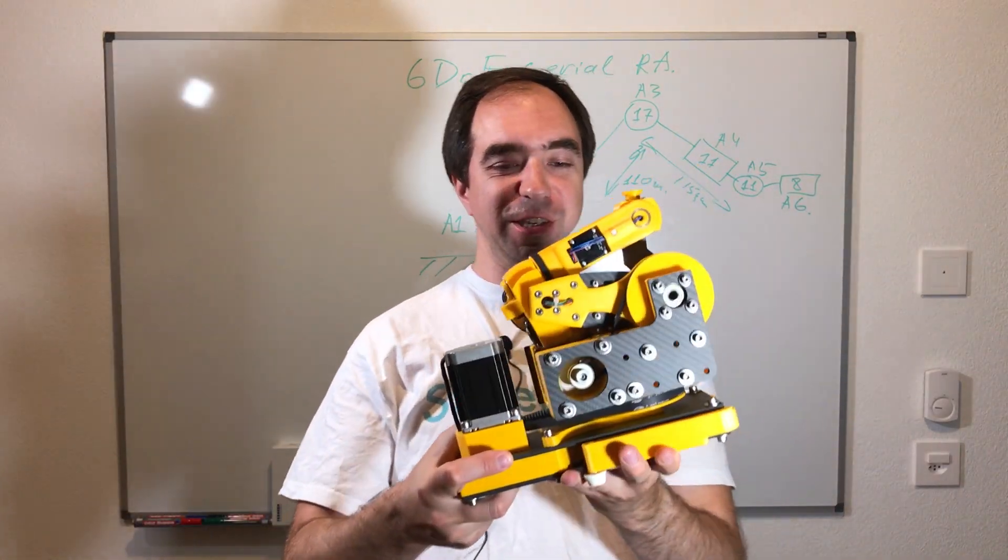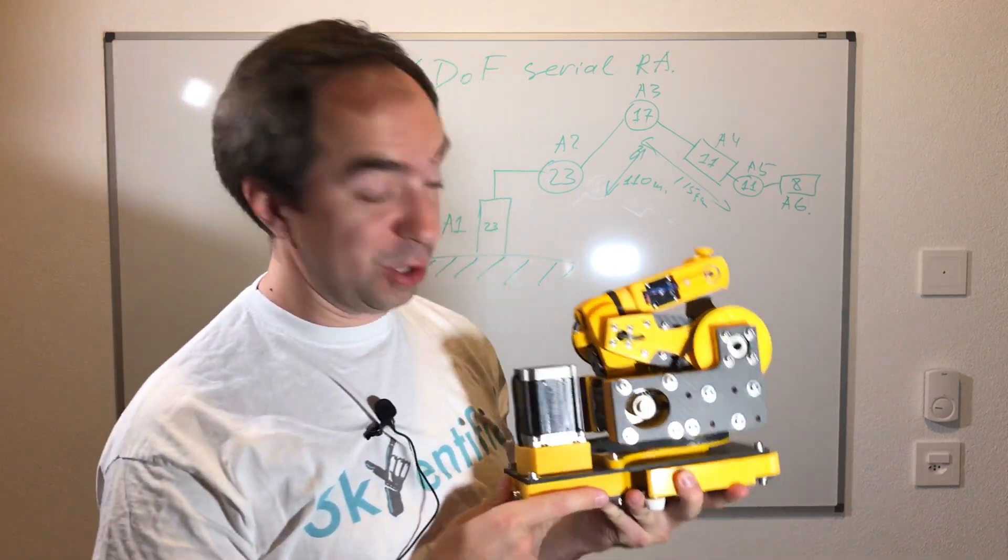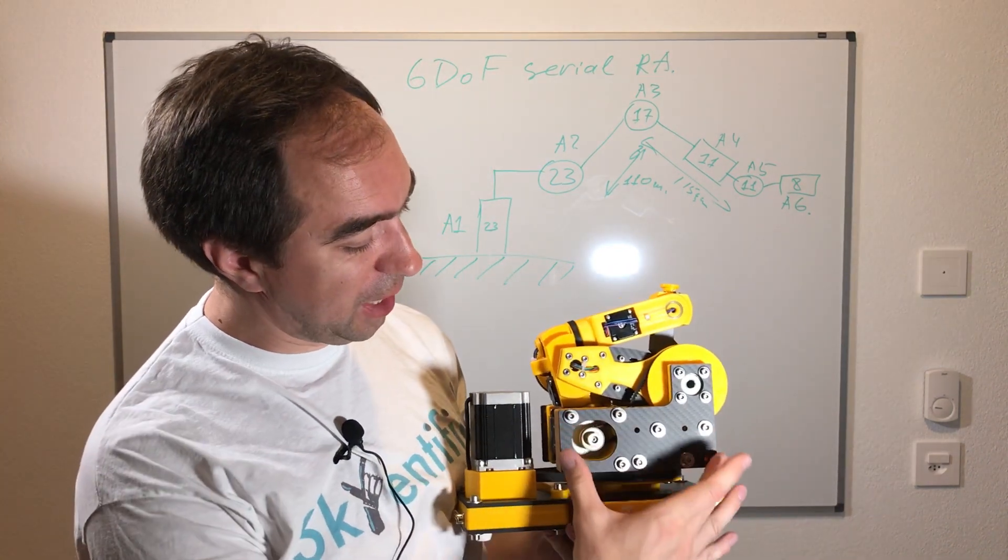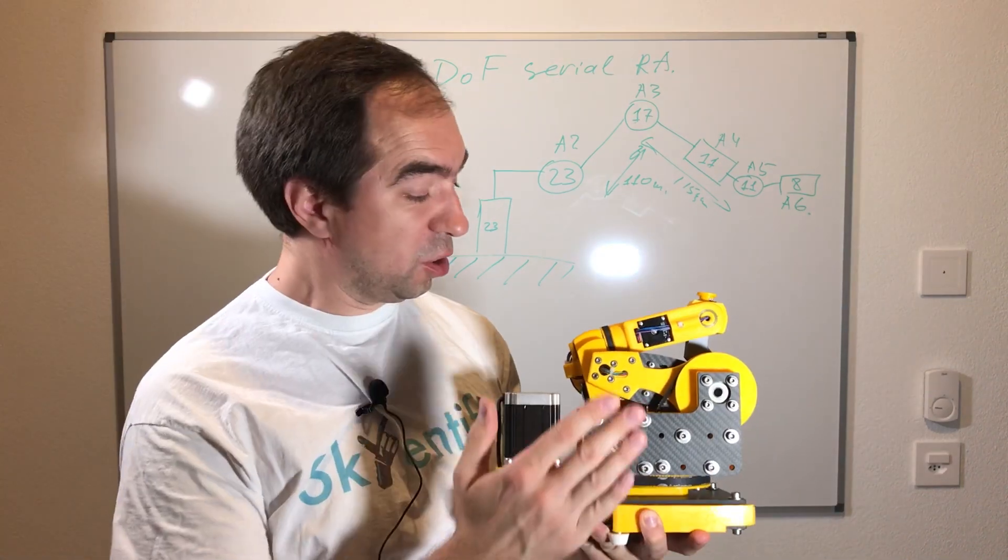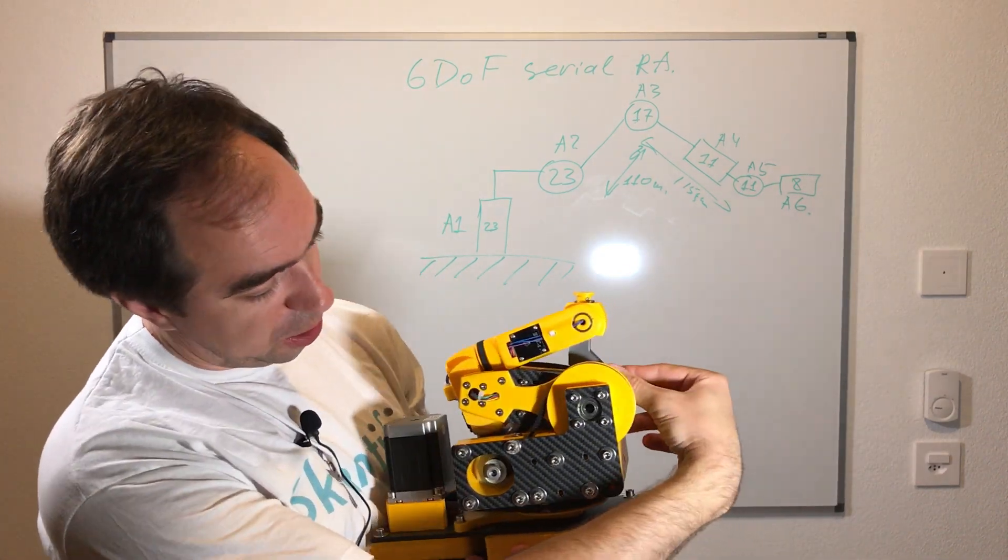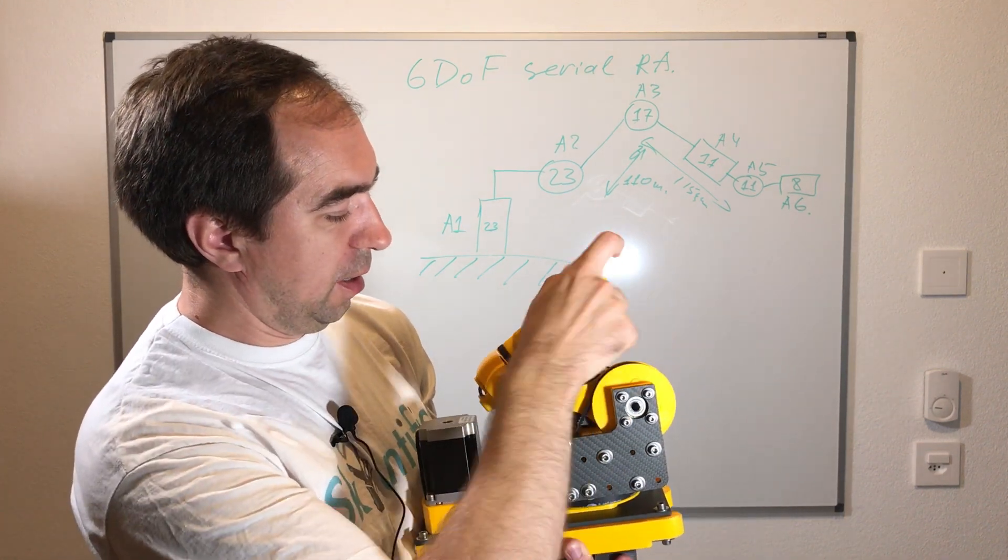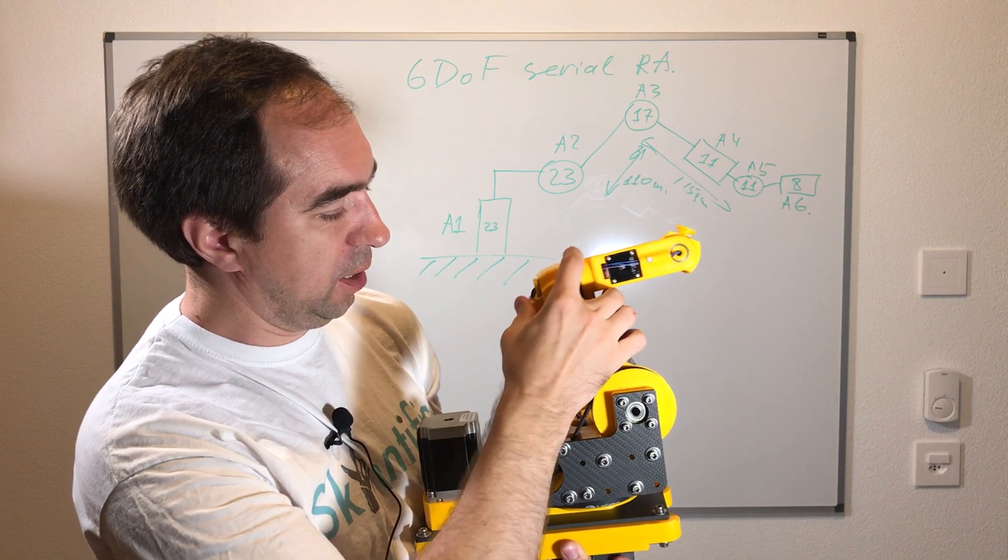And this is the beast. This is my current prototype. So it's super heavy, but most of the weight is close to the base, so it doesn't decrease the performance of the robot. This is just the support, and this is the robot itself. So you can see how it moves.